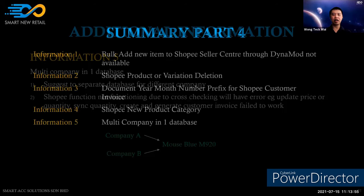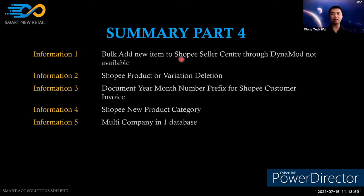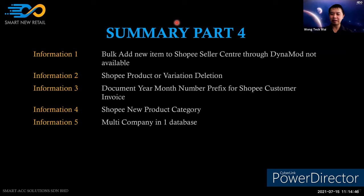Q&A: a question about whether Shopee's Excel template for uploading items means the system should be able to bulk update stock items to Shopee — this relates to the Shopee API, which does not provide a bulk update function for items. Another question: when adding stock to Shopee from stock maintenance, can you select a product image from your computer instead of entering an image URL? Currently, selecting an image from the computer is not supported — please log a case if this is needed.